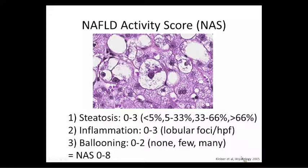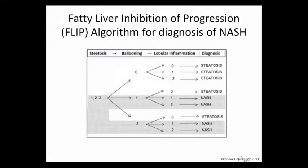Kleiner gave a talk a couple of years ago at AASLD, our big liver meeting, proposing that we increase the balloon grade from zero-to-two to zero-to-five because it's so important and typically underscored. Pierre Bedosa, a pathologist out of Paris, looked at different algorithms using the NAFLD activity score to determine whether it's simple fatty liver or more aggressive NASH. You need greater than 5% steatosis, some ballooning, and some inflammation to call it NASH.